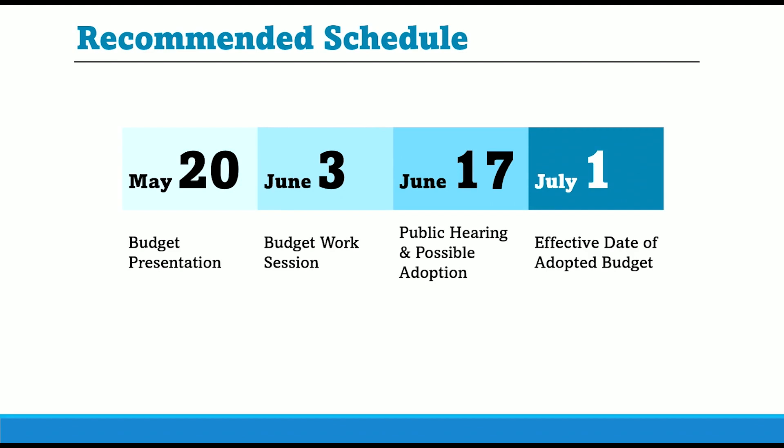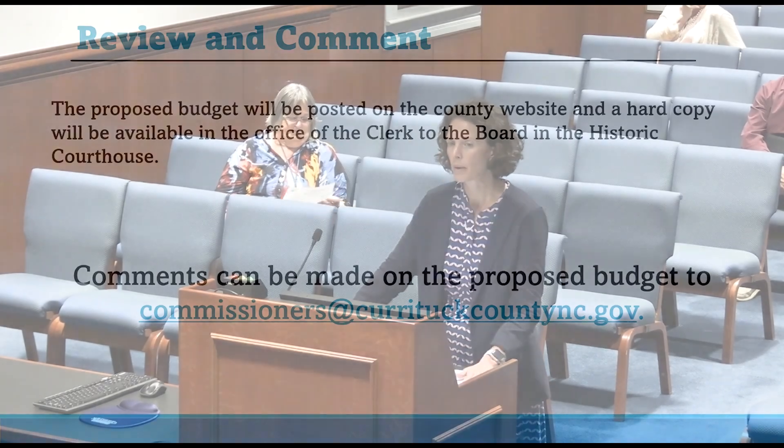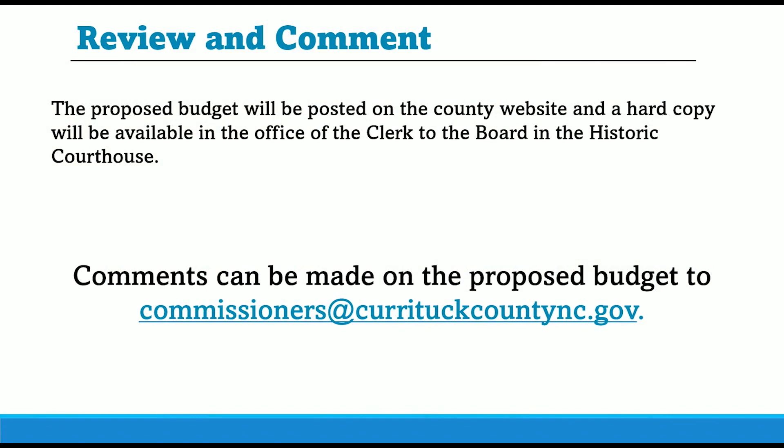The board has received this presentation and there will be a budget work session held on June 3rd. There will be a public hearing and possible adoption at the second meeting in June, with an effective date of the adopted budget of July 1st. The budget will be posted on the website and available in the office of the clerk to the board. Comments can be emailed to commission at Currituck County dot com.